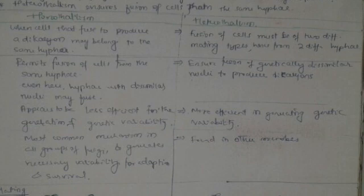The two nuclei of the dicarion ultimately fuse to produce a diploid nucleus, which undergoes meiosis to produce four haploid nuclei. The haploid nuclei may or may not divide mitotically before they produce haploid sexual spores, which on germination give rise to the haploid phase of the life cycle.